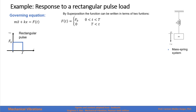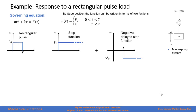As an example, we want to find the response to a rectangular pulse load using the superposition method. The governing equation for a mass-spring system is this one right here. This is our rectangular pulse: we have a force equal to F sub 0 for time greater than 0 and less than capital T, and then 0 for time greater than capital T.